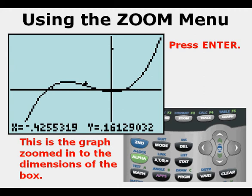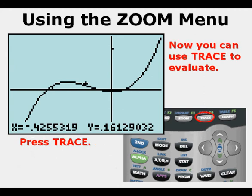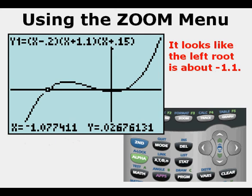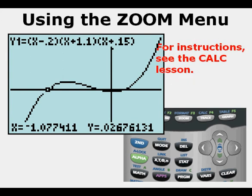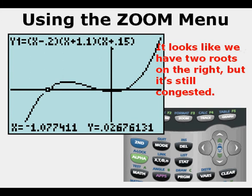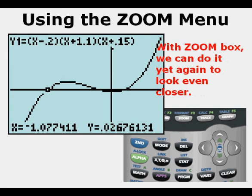Press Trace. We can use the trace feature of the calculator to evaluate this function. It looks like the left root or zero is at about negative 1.1. We could find the exact zero using the Calc menu. It looks like there are two roots on the right near the y-axis, but it's still congested there. With Zoom Box, we can zoom in yet again to get an even more microscopic view — we can do it time after time.